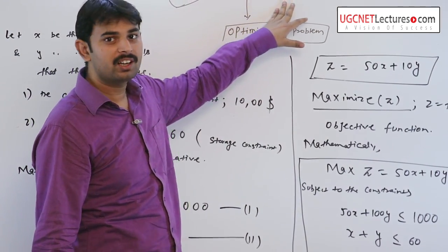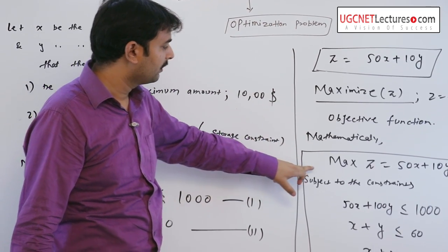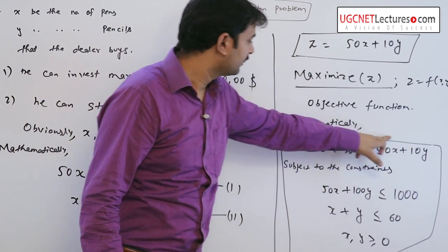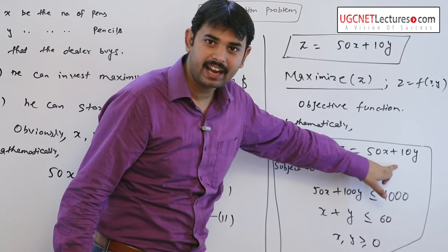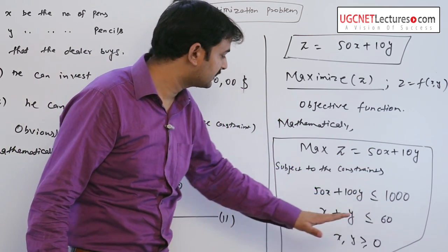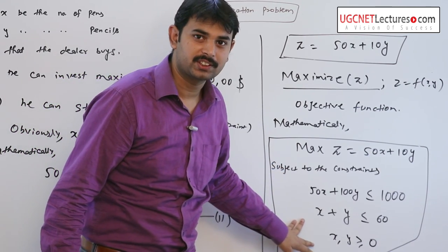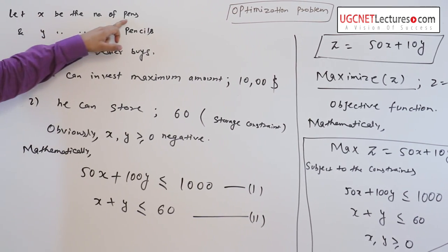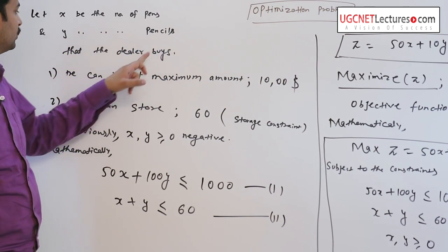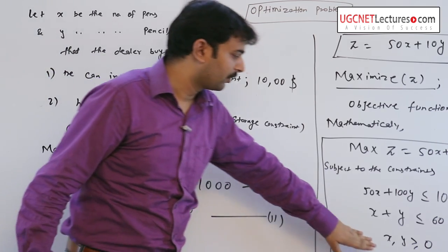A linear programming is one that is concerned with the optimization of a function which is linear in x and y, in such a way subject to the constraints. Here x and y are the number of pens and pencils, so obviously x and y are non-negative.